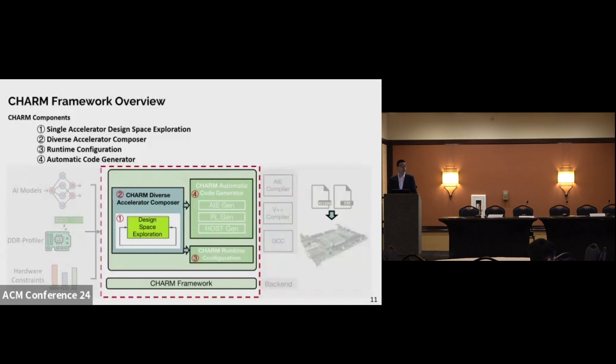For our main part of the CHARM framework, there are four modules, including the single accelerator DSE, the diverse accelerator composer, the runtime configuration, and automatic code generator. When composing multiple accelerators together, our CHARM diverse composer will sequentially launch the single accelerator design space exploration, and the runtime configuration is responsible for keeping the right execution order of the different layers. The automatic code generator will leverage the information coming from the diverse accelerator composer as well as the runtime configuration to generate C or C++ instruction code for AIE and the AIE graph for the AIE design. For PL design, it will generate the high-level synthesis C or C++ code. For the host, it will generate the AMD Xilinx runtime library-based C or C++ code.